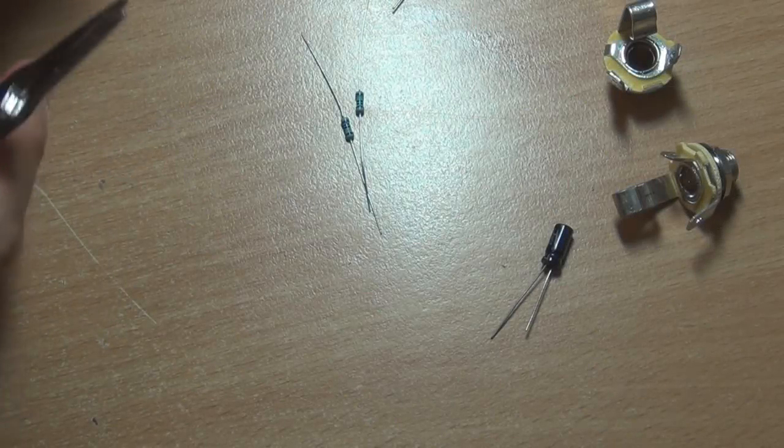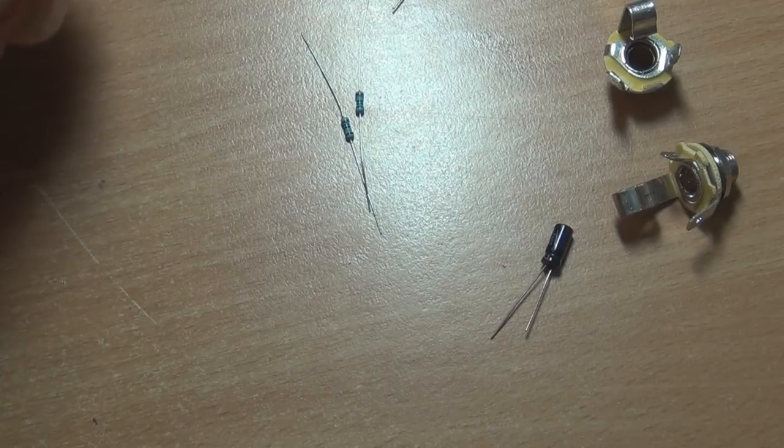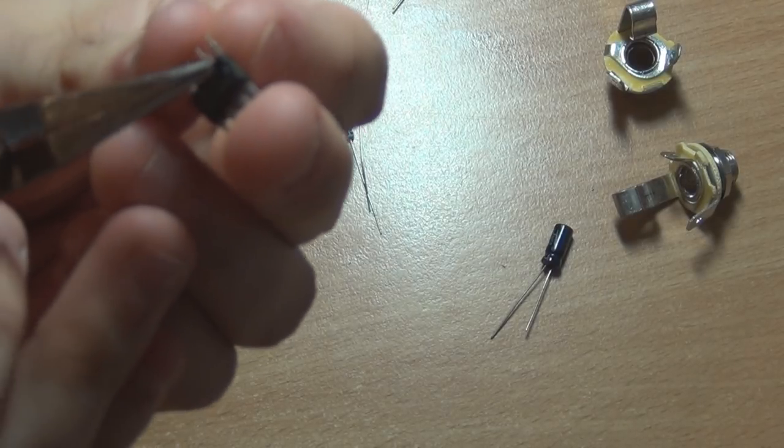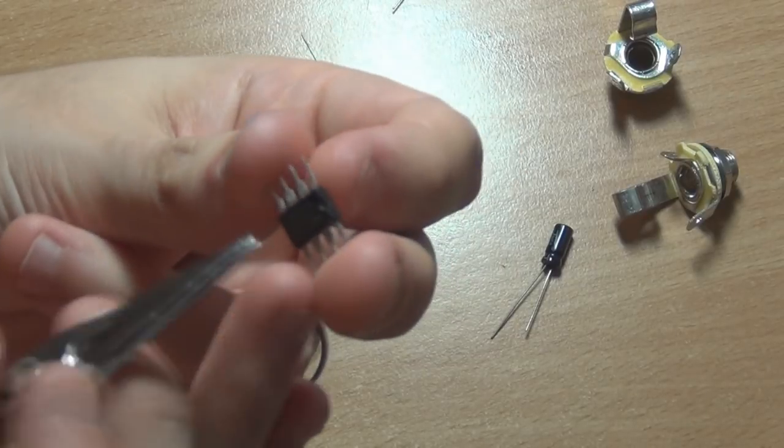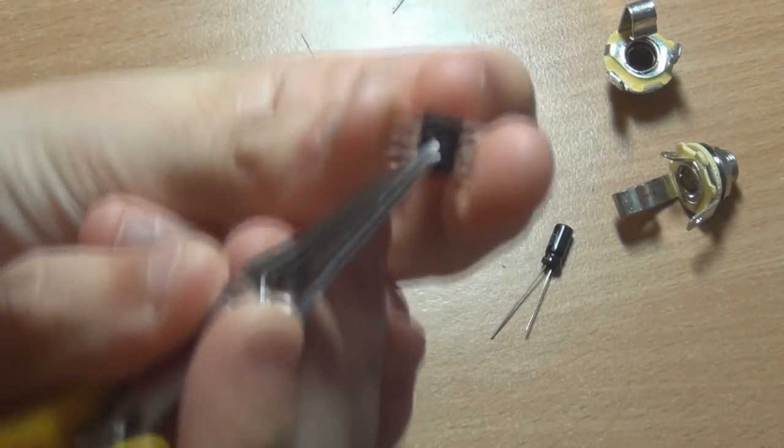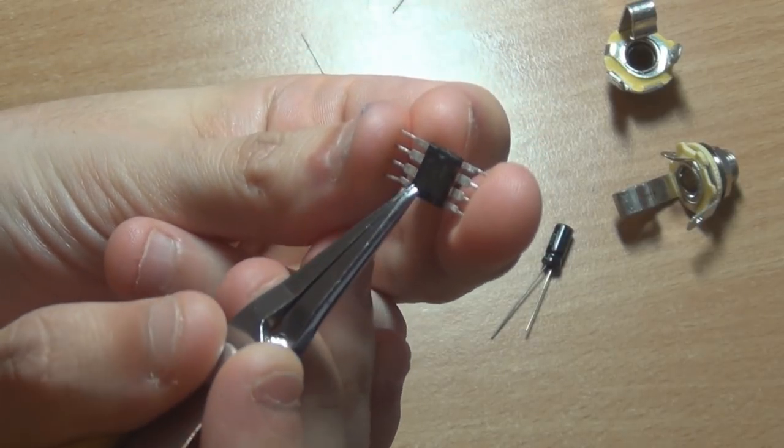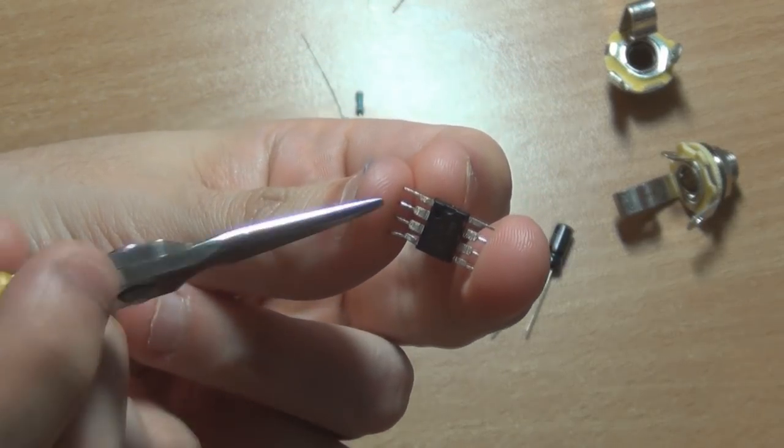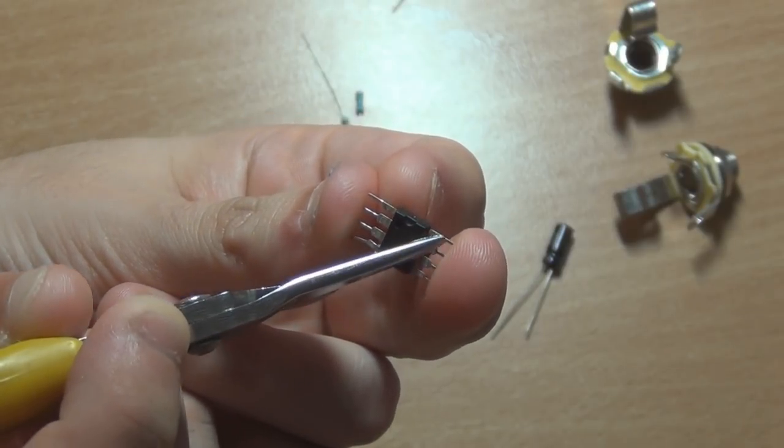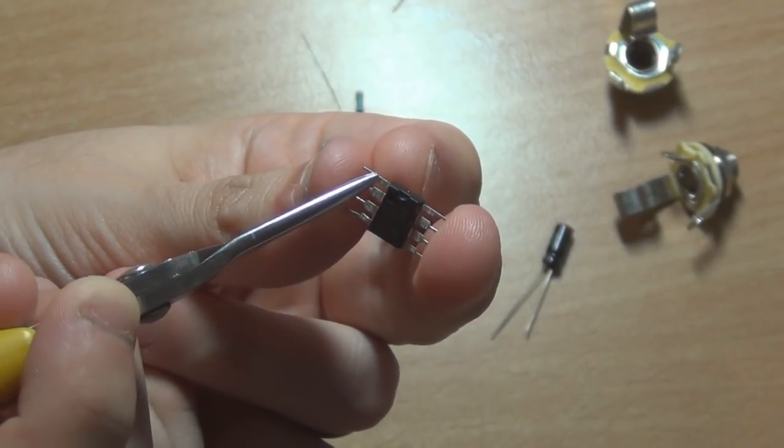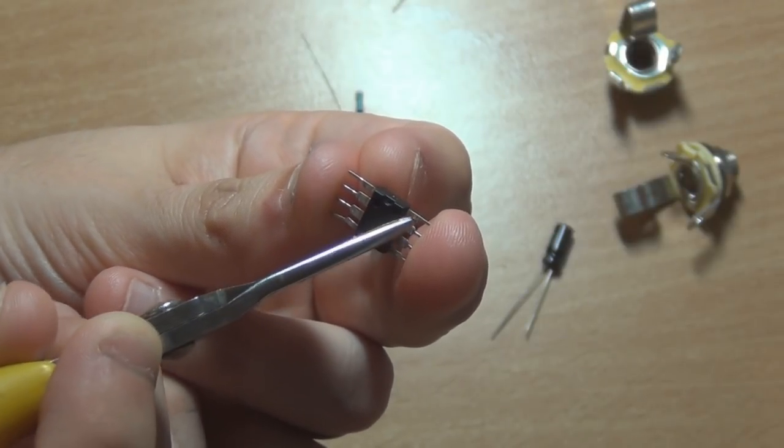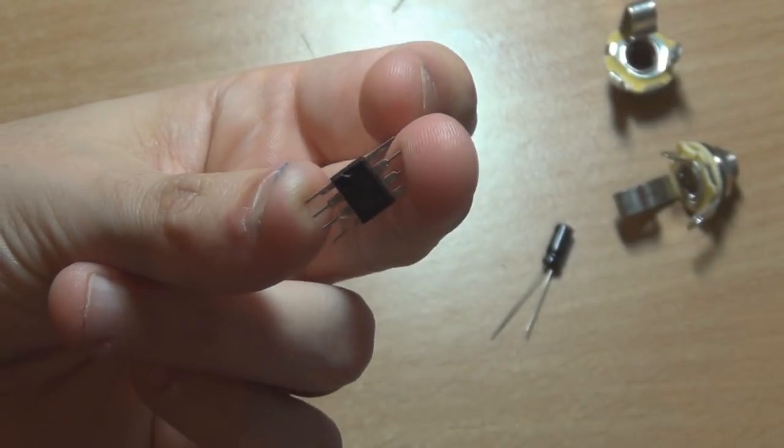And just one other thing about these ICs to pin out, the pin one is the one with the little dot on it, I'll just get it in the light so you can see it. That's pin one and you actually count one, two, three, four, five, six, seven, eight. You go across at four to five, one, two, three, four, five, six, seven, eight. That's how the pin out is for these ICs.